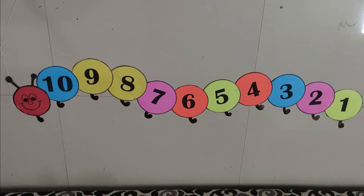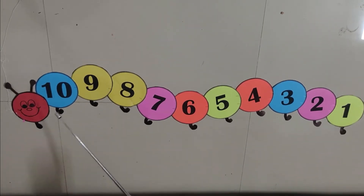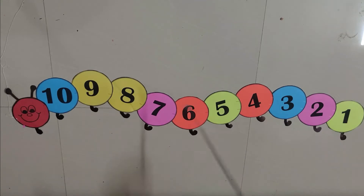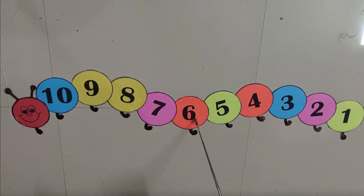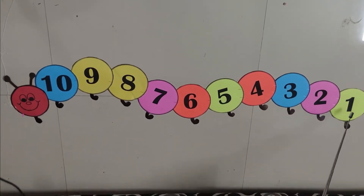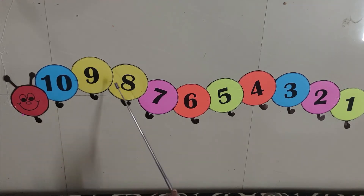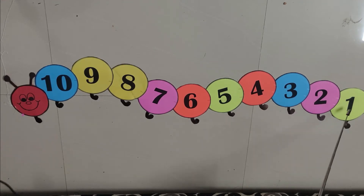Now see the caterpillar, children. Something is written on its body. Let's see what that is. Count the numbers — see how it is: it is backward, from bigger number to smaller number. Now let's count: 10, 9, 8, 7, 6, 5, 4, 3, 2, 1. This is called backward counting.